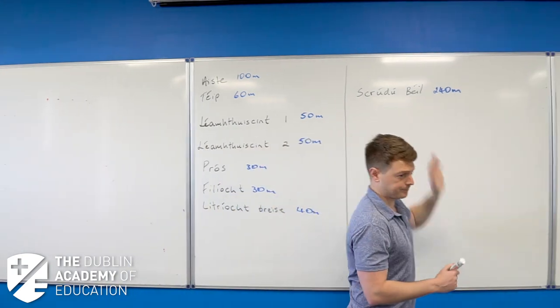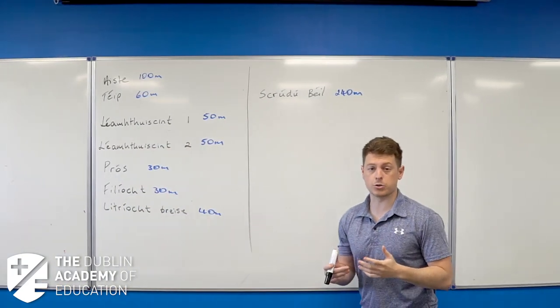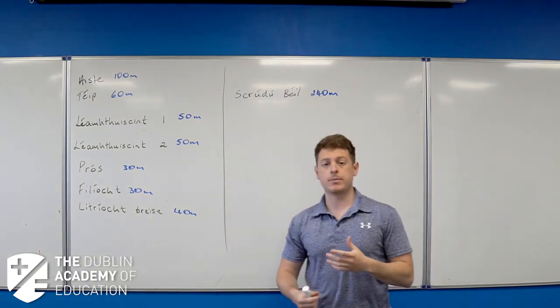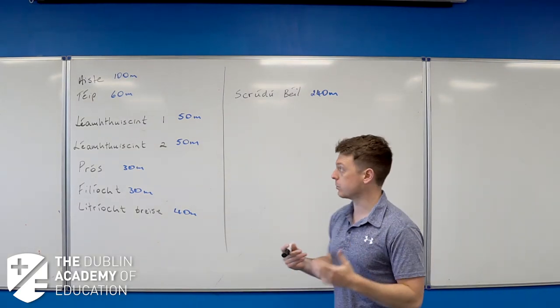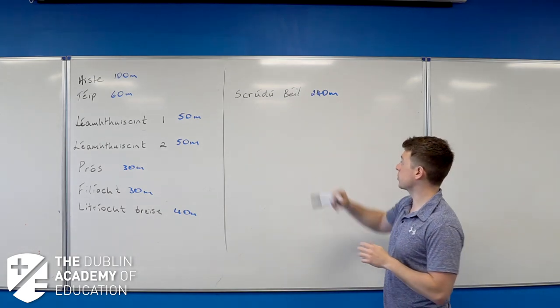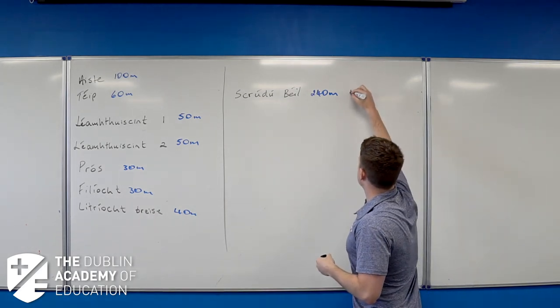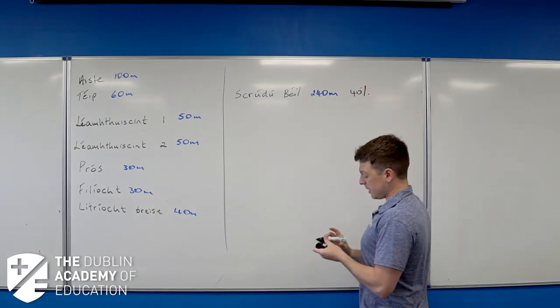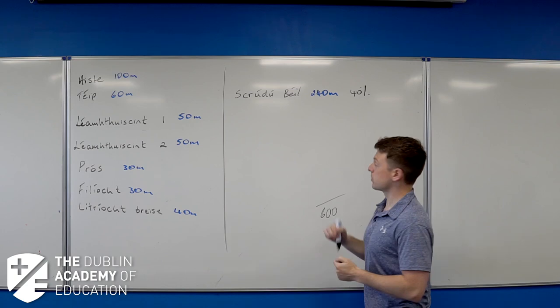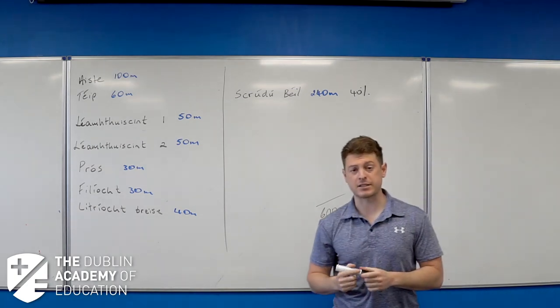Up here, your screw to bail, your exam. I do the Irish oral. I'm an Irish oral examiner for the SEC. So I'm going to try to talk you through about what's good, what's bad, what you need to work on, what we're going to try and avoid. This is worth 240 marks, that's 40%. How do I know that? Because your exam is out of 600.